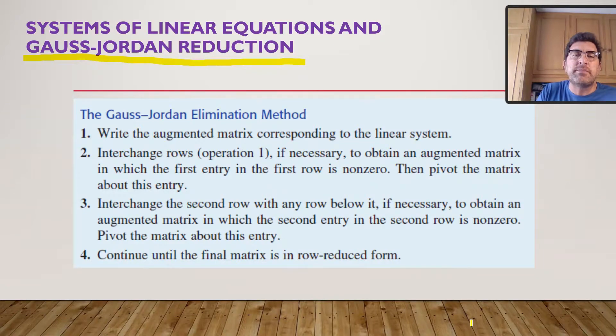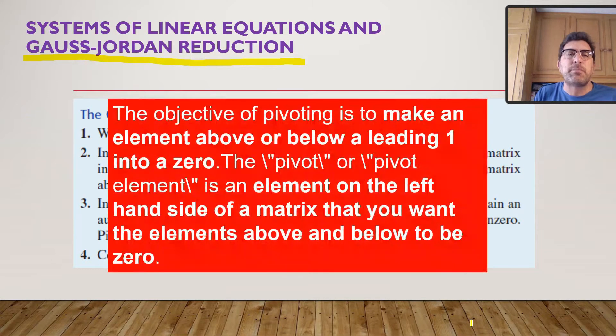With Gauss-Jordan elimination, we do the following. We write the augmented matrix corresponding to the linear system like we did. We interchange the rows, if necessary, to obtain an augmented matrix in which the first entry in the first row is non-zero. The pivot, then we pivot the matrix around this entry.